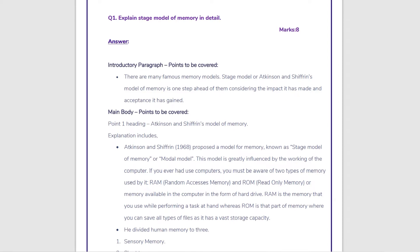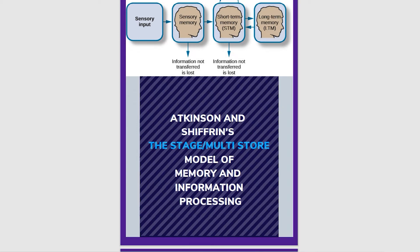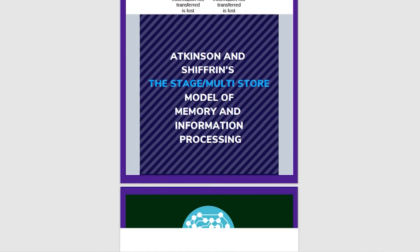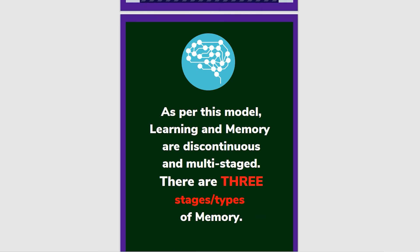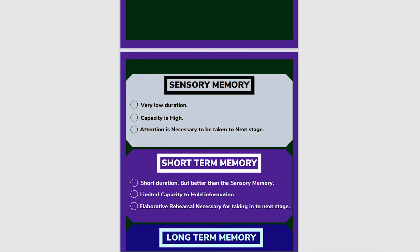The first question is to explain the stage model of memory in detail. The stage model of memory was proposed by Atkinson and Shiffrin. It is a multi-store model. According to this model, learning and memory are discontinuous and multi-staged — there are different stages.